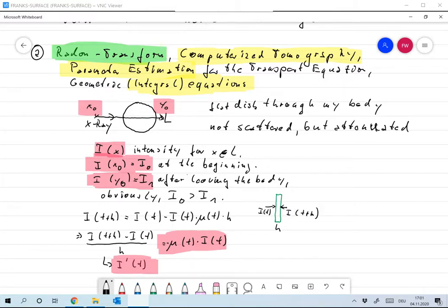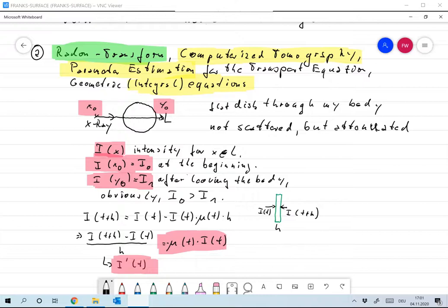So the loss of intensity should be given by h times I(t) times some proportionality factor, and that proportionality factor will be large when we have bone—when we believe that a lot of intensity of the x-ray beam gets lost—and it would be very small in air, or even zero in air. The proportionality factor could be zero if we're looking at air. Okay, so this is something which you have to believe me, but I think it's quite obvious that this is not a bad approximation.